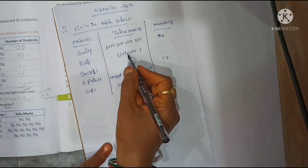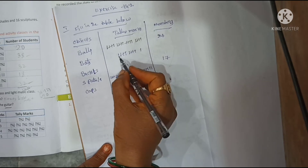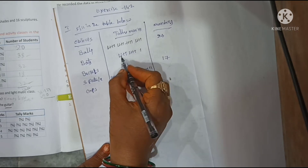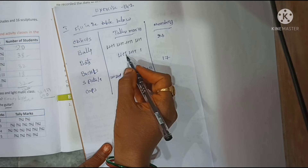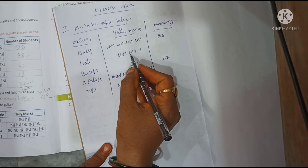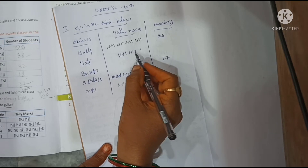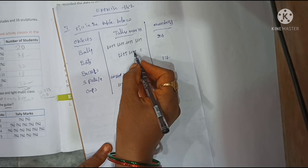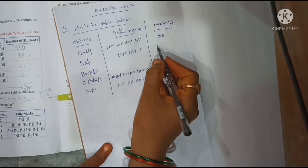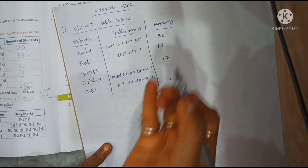Now count and write the number. Counting: 1, 2, 3, 4, 5, 6, 7, 8, 9, 10, 11. Answer: 11.